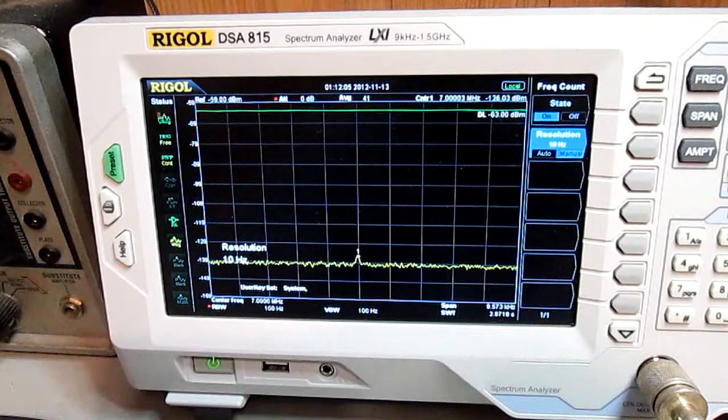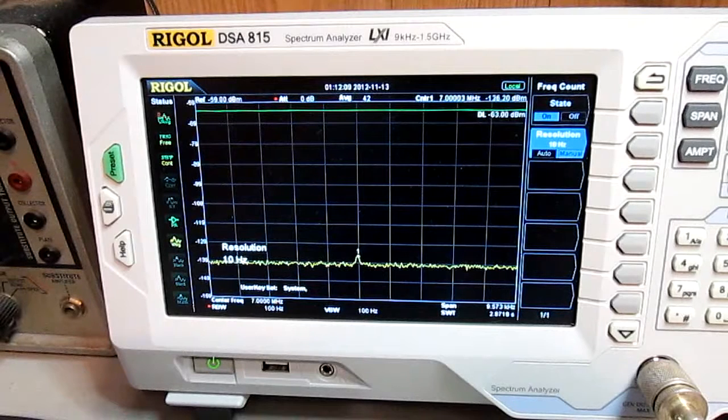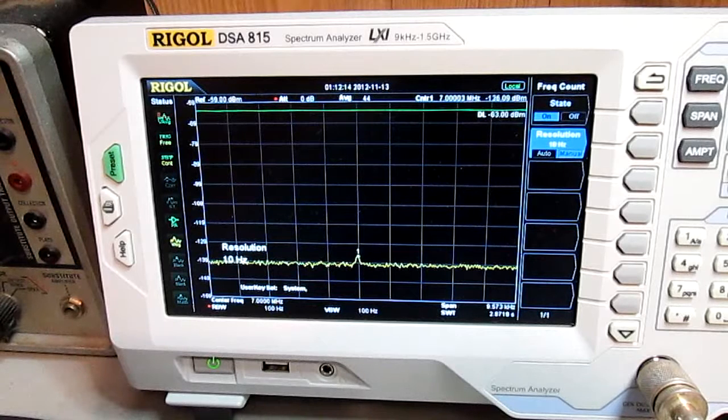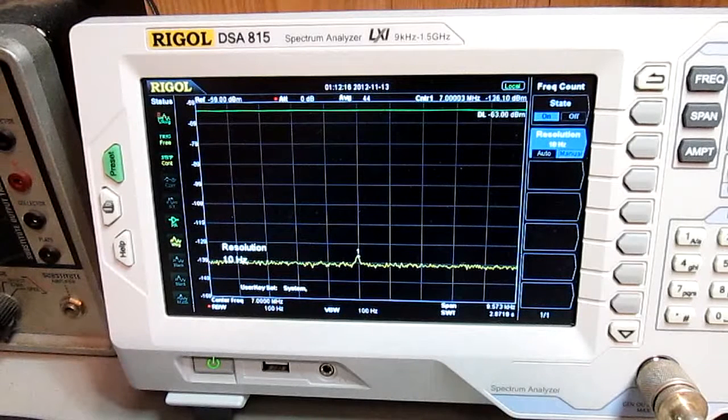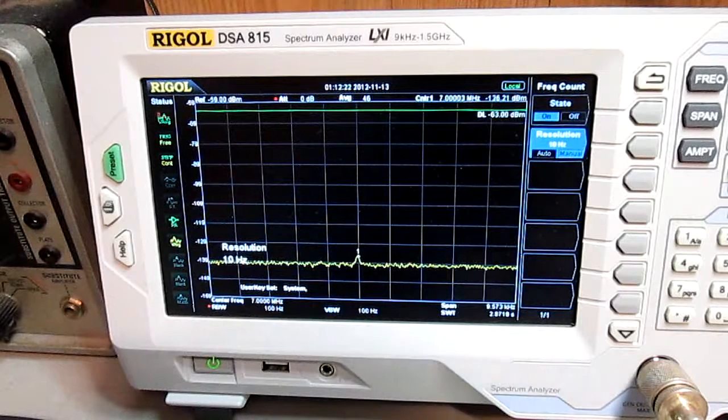One thing you might notice if you can see the bottom of the screen is that this band is turned all the way down to like 9.5 kHz, and the resolution bandwidth, which is like the window that it's seeing as it goes across the screen, is only 100 Hz wide. It's set to 100 Hz, and the video bandwidth is set to 100 Hz.